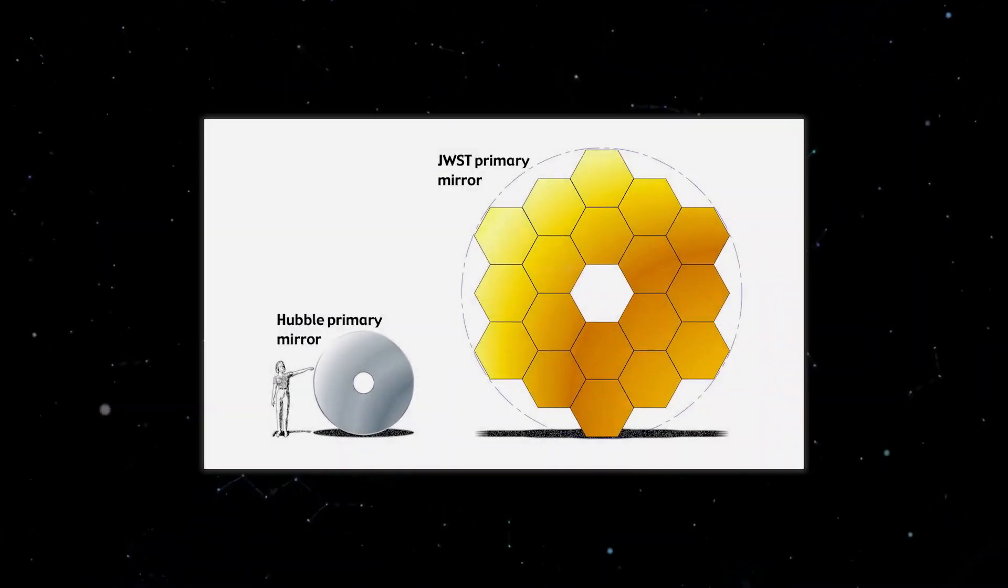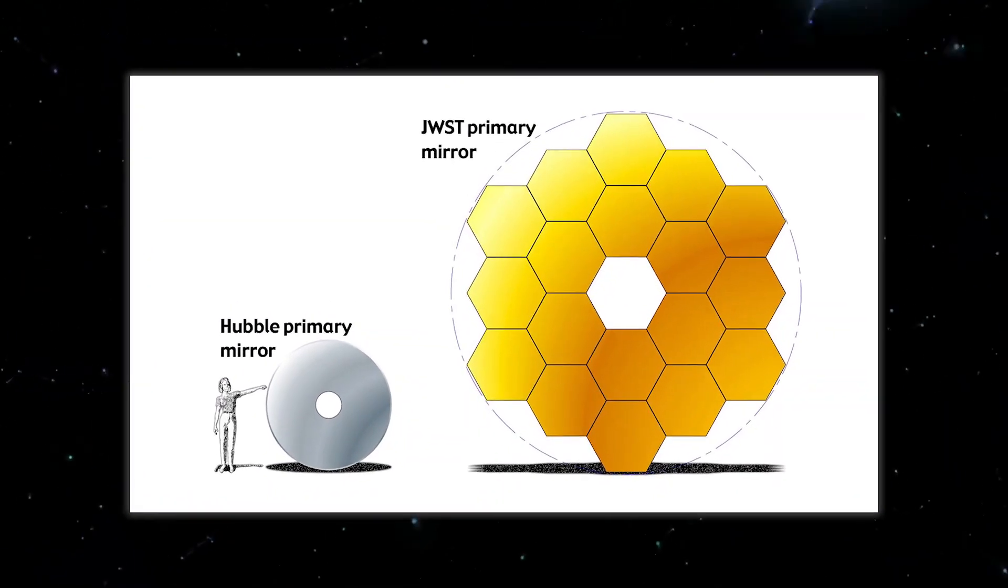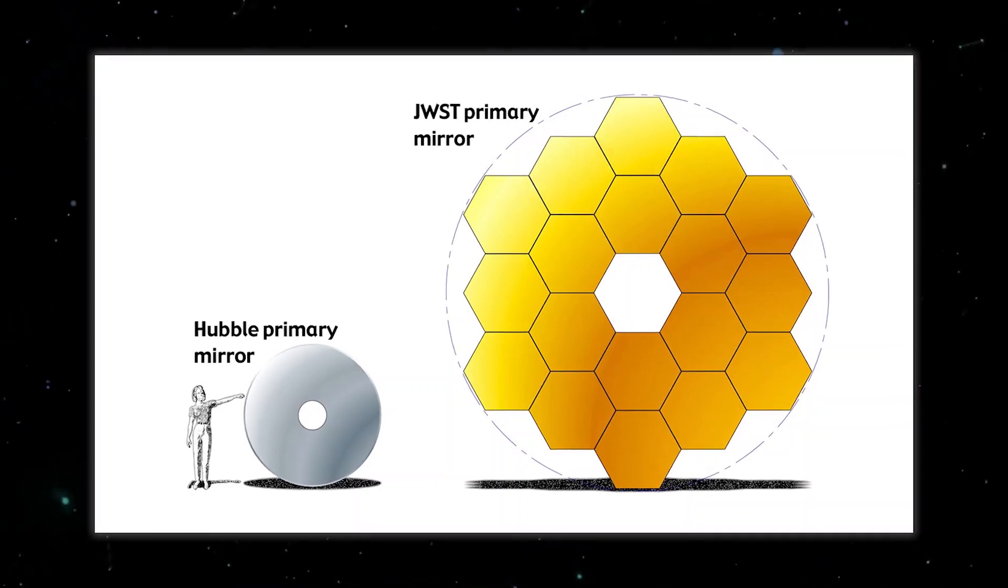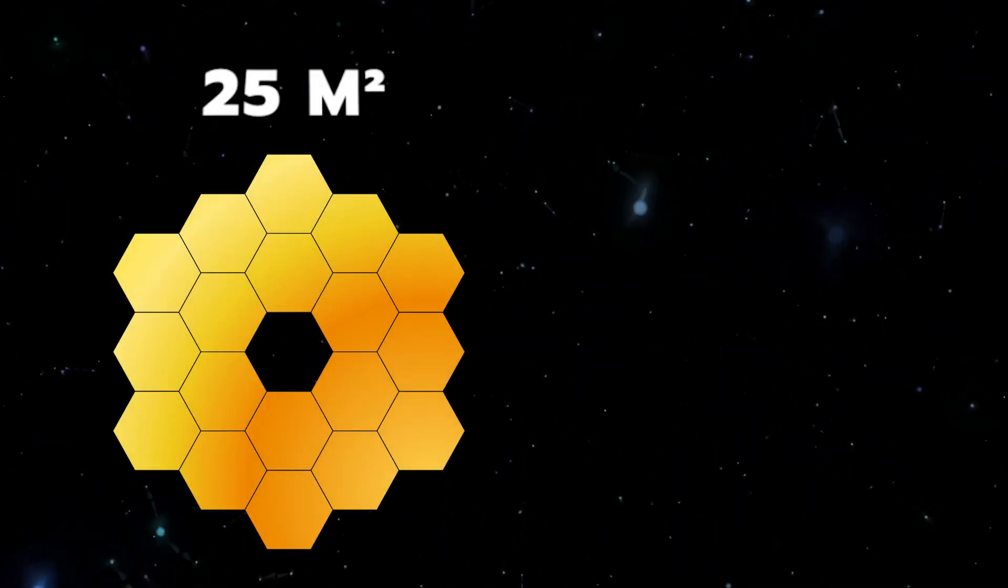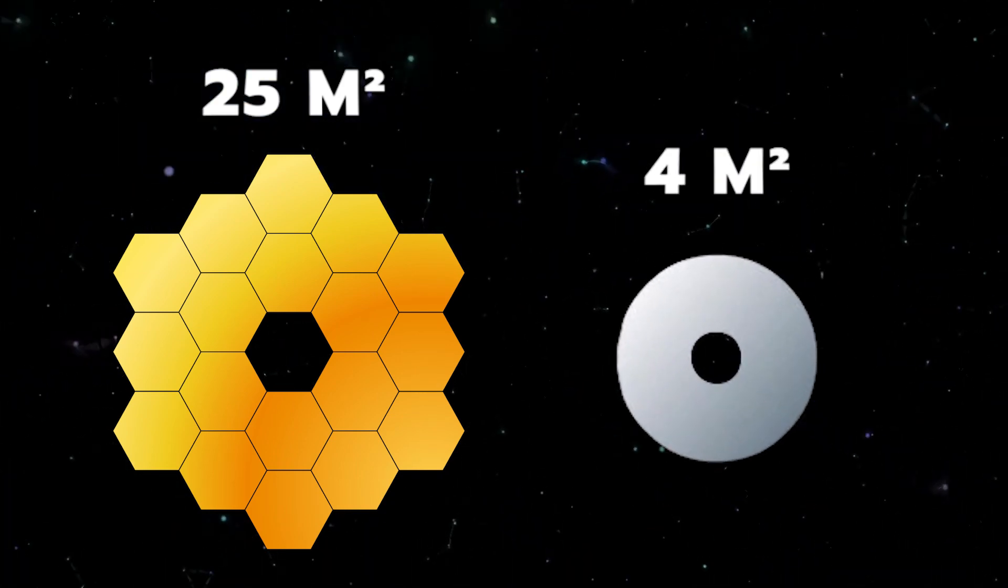This gives the Webb telescope a light-collecting area about 6.25 times as large as Hubble's. Webb's collecting area is 25.37 square meters compared to Hubble's 4.0.